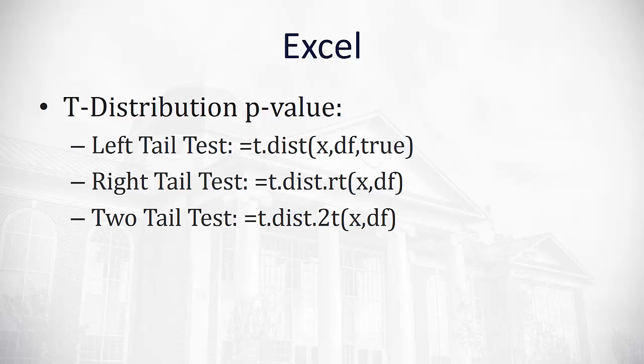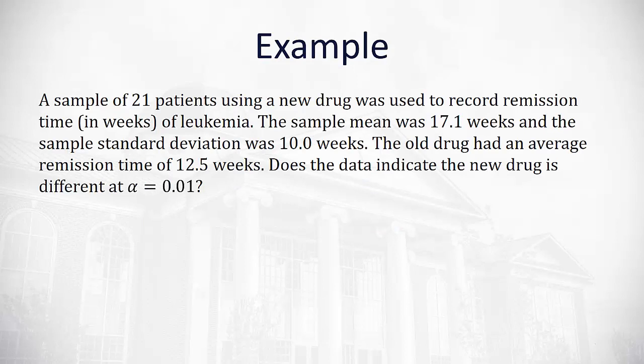Let's take a look at an example problem that will require us to use one of these commands as we conduct a hypothesis test. Here we have a sample of 21 patients. Those 21 patients, that's our sample size, so let's just label that n equals 21. We're using a new drug, and it was used to record the remission time in weeks of leukemia. The sample mean was 17.1 weeks. That's our x bar.